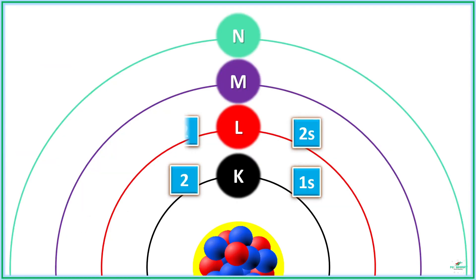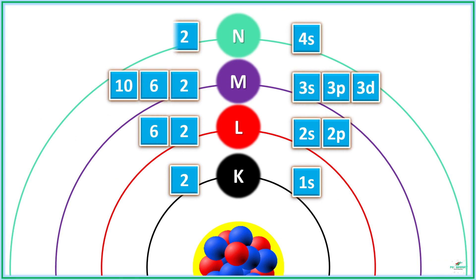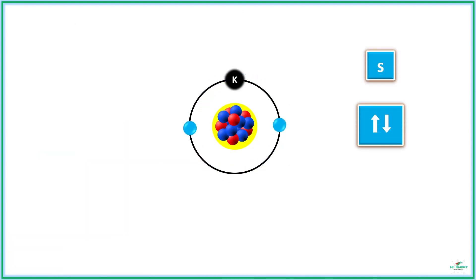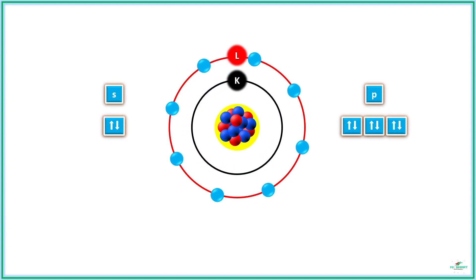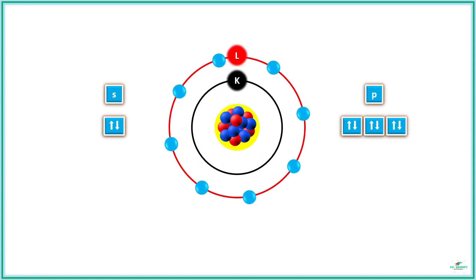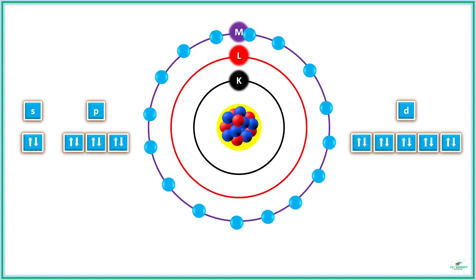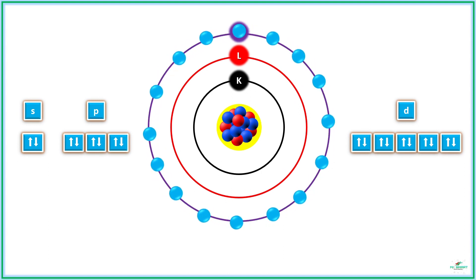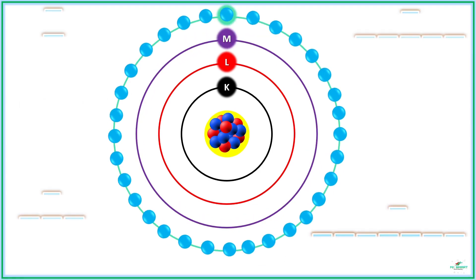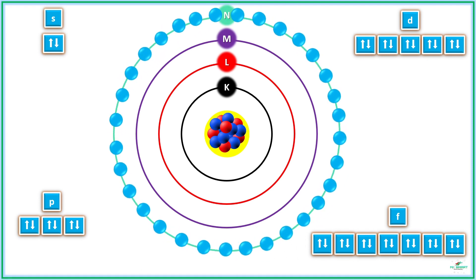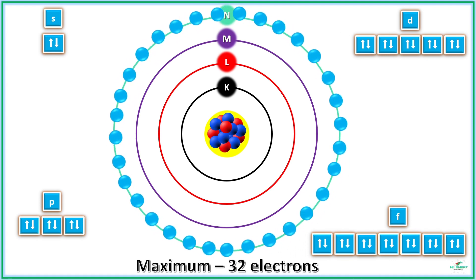Each shell has one or more orbitals according to their level and has a maximum number of electrons filled in it. The first energy level has only the S orbital and is filled with a maximum of one pair, or two electrons. The second energy level consists of S and P orbitals and is filled with a maximum of four pairs, or eight electrons. The third energy level consists of S, P, and D orbitals and is filled with a maximum of nine pairs, or 18 electrons. The higher energy levels consist of S, P, D, and F orbitals and are filled with a maximum of 16 pairs, or 32 electrons.